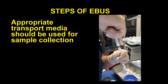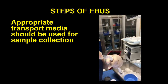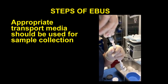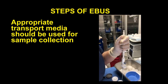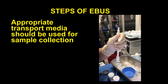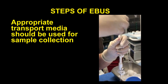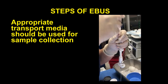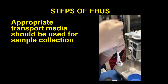During sample collection, the appropriate transport media should be used. The tissue core can be removed from the needle lumen by reinserting the stylet, or by instilling 1 to 2 cc's of collection media through the needle lumen with a syringe. Tissue fixatives such as Cytorich are used for specimen preparation. Preservatives such as RPMI media should be used for flow cytometry analysis in the workup of suspected lymphoma.